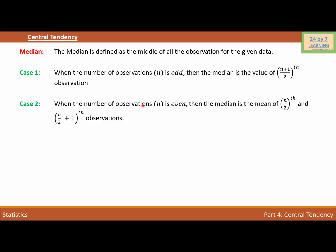Case two: when the number of observations is even, then when we have n as even number of observations, we will add the two middle terms of the data and divide by 2, and whatever value we will get, that will be the median of the given data.